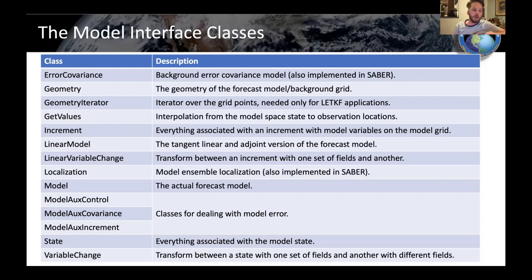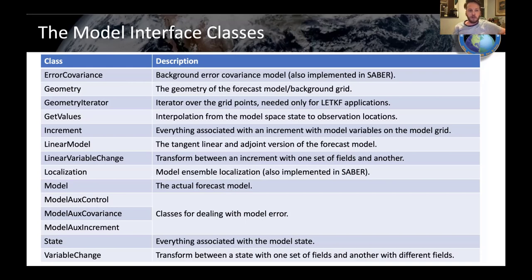You hear the word 'model' meaning various different things. There's the model space, which is the collection of all these classes, but one of the classes within the model space is 'model', meaning the actual forecast model. JEDI can actually drive that forecast model, make forecasts, and interact with the model state as the model is propagating — a very key capability. Then there are model auxiliary classes, the state class, and the nonlinear variable change. If you implement all these classes, you can basically inherit all of the applications available in JEDI.